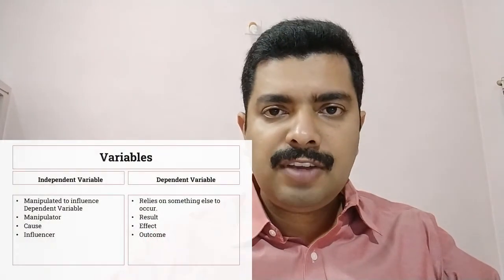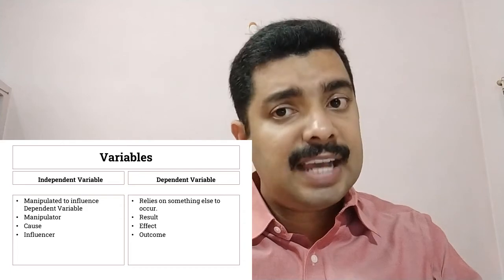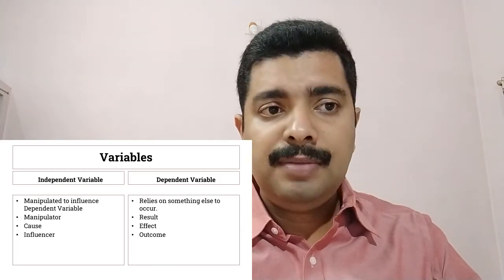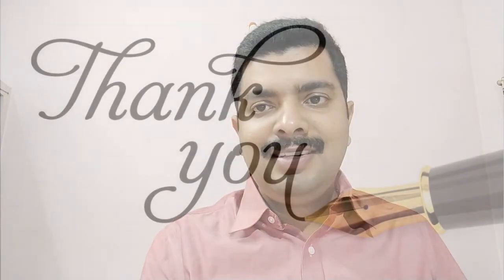To summarize what we learned in this webinar: we have two types of variables — dependent and independent. The independent variable is manipulated to influence the dependent variable, whereas the dependent variable relies on something else to occur. The independent variable is the manipulator, cause, or influencer; the dependent variable is the result, effect, or outcome. In short, a variable is something that changes. Hypothesis testing and higher-level research topics are rooted in this basic concept. Happy learning — this is Jitin. Thank you.